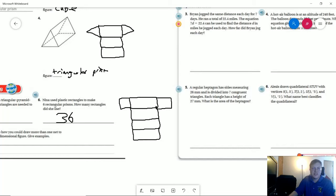So number six, Nina used plastic rectangles to make six rectangular prisms. Here's what a rectangular prism would look like. Pretend that this one is a rectangle and not a bad attempt at a square. This one I did a little bit better with.